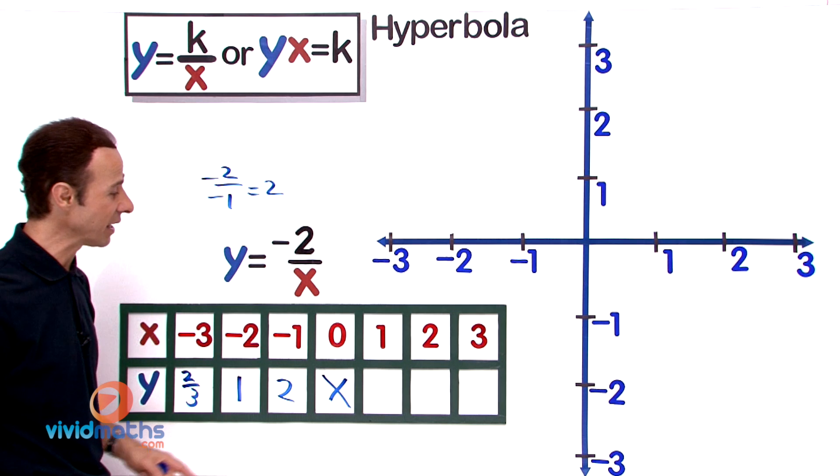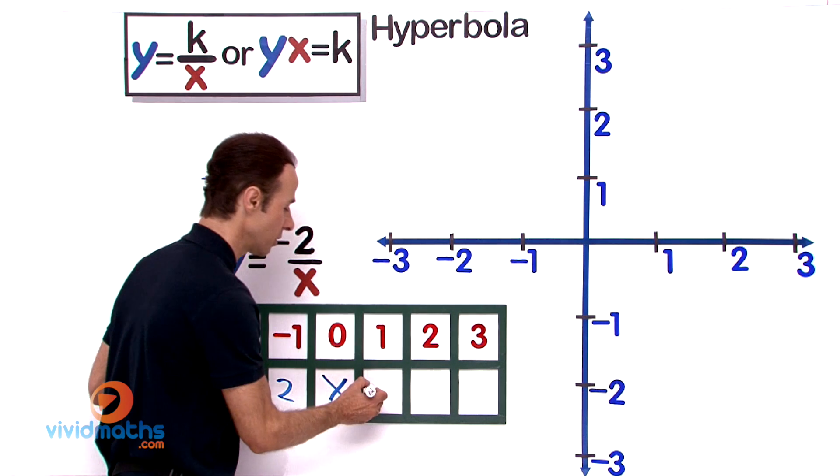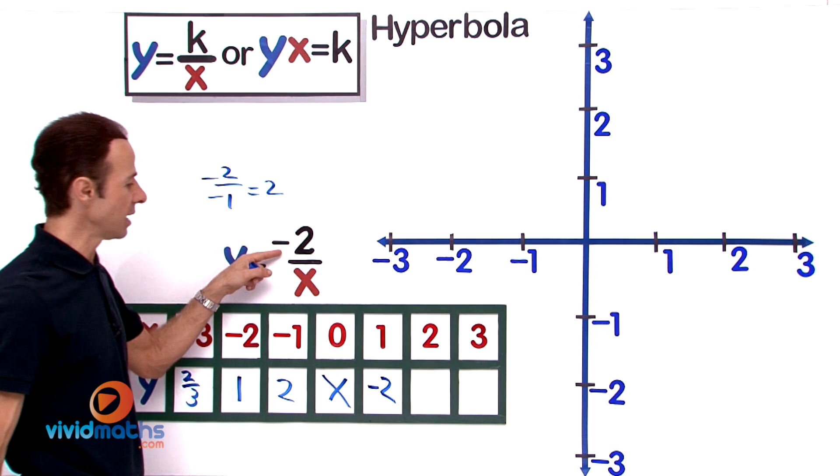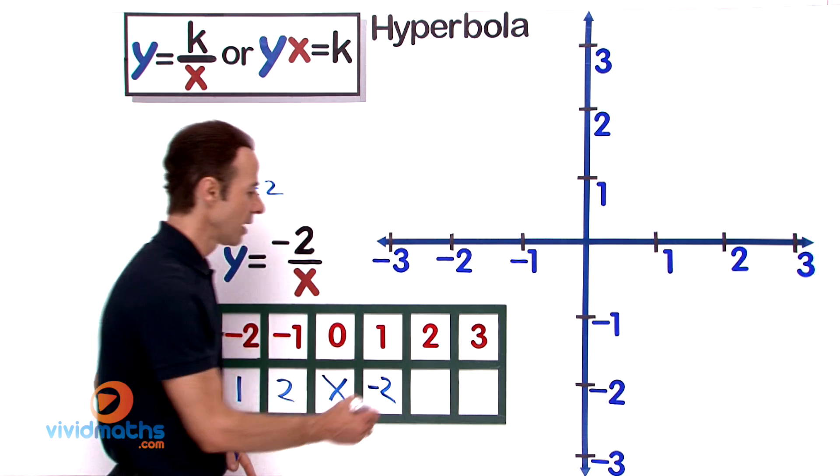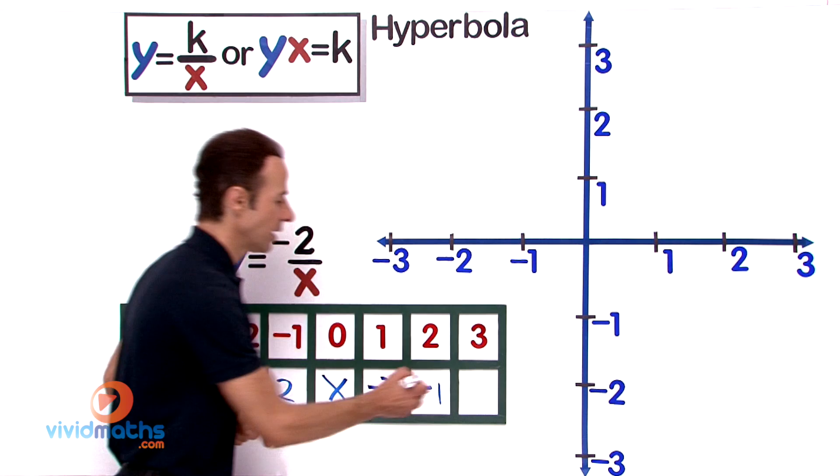The next one is 1: negative 2 over positive 1 will give us negative 2. And negative 2 over positive 2 is negative 1, and negative 2 over positive 3 is negative 2 thirds.